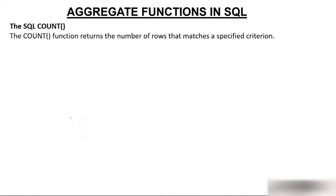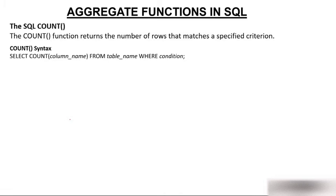The COUNT function returns the number of rows that match a specified criteria. So COUNT is used for counting rows. The syntax is: SELECT COUNT(column_name) FROM table_name WHERE condition — the same structure as before, just replacing MIN/MAX with COUNT.